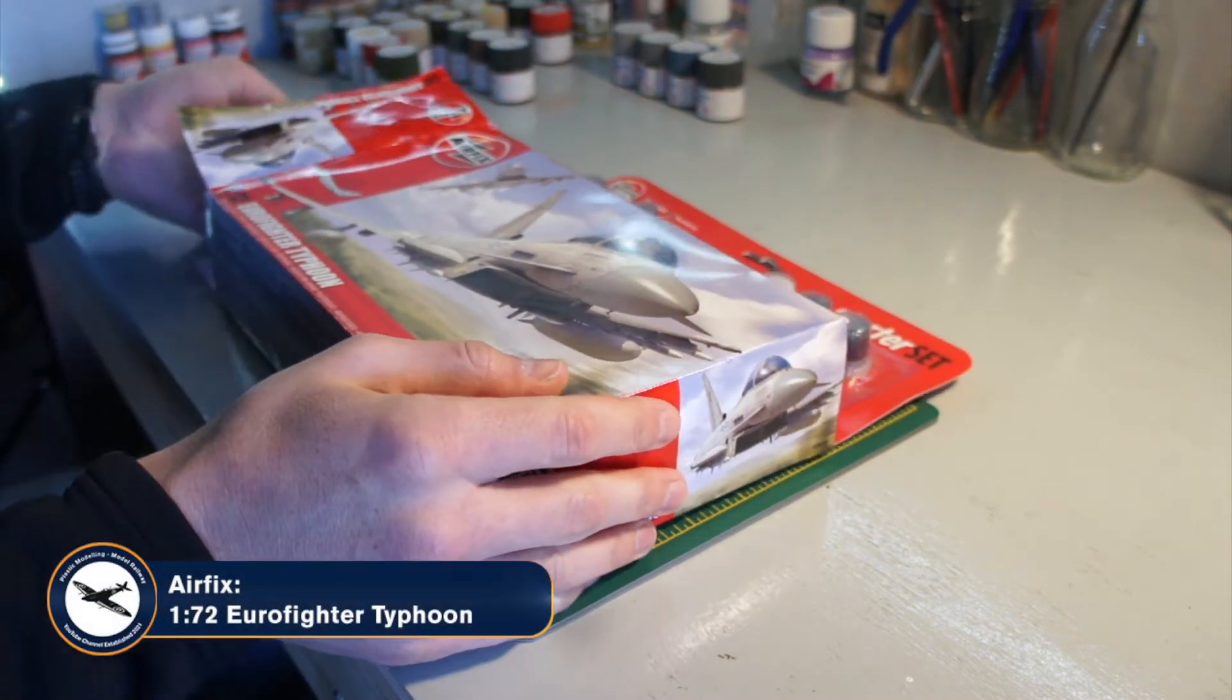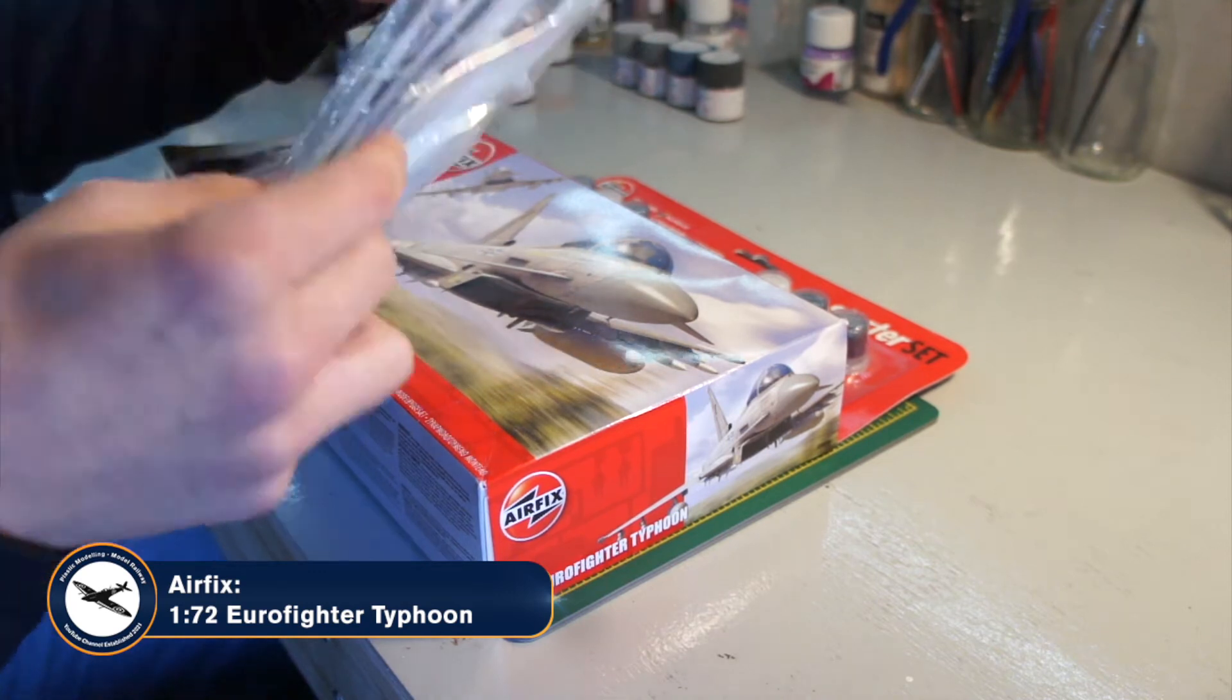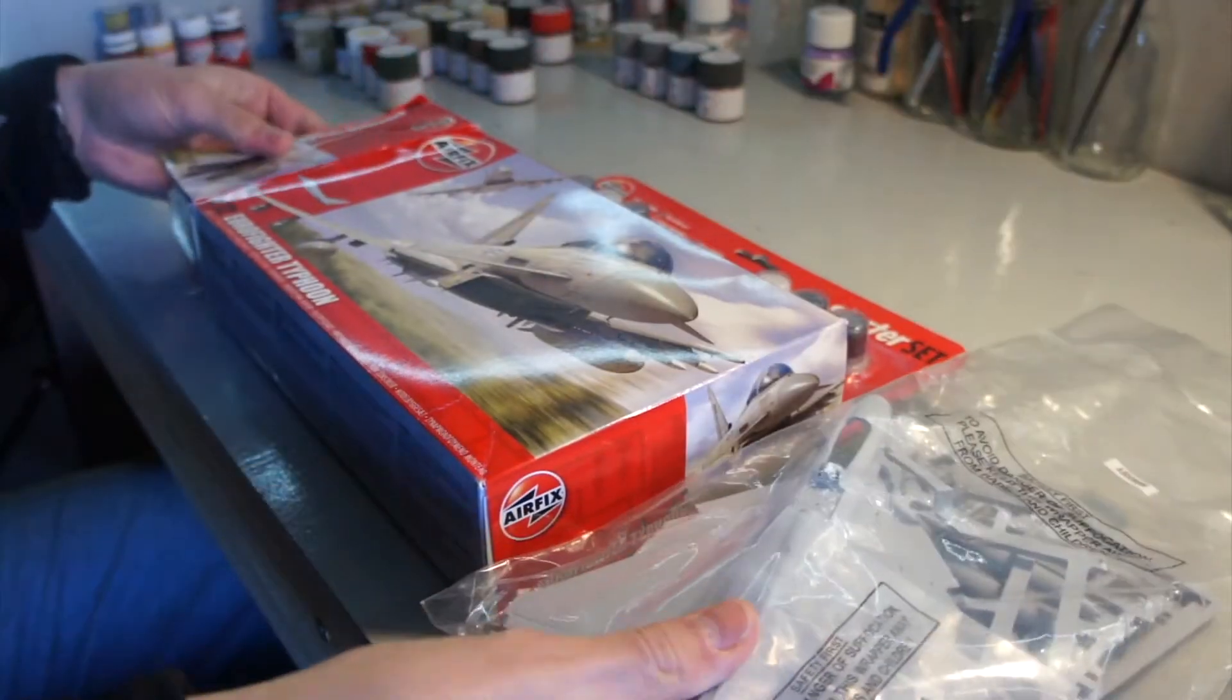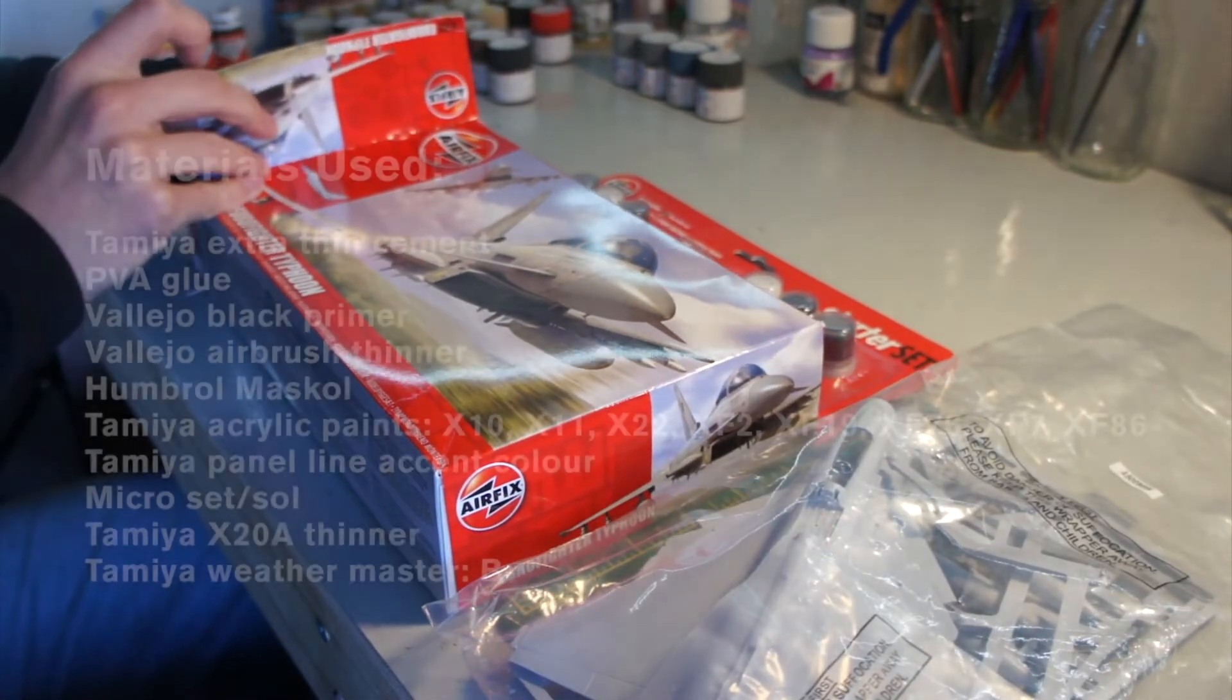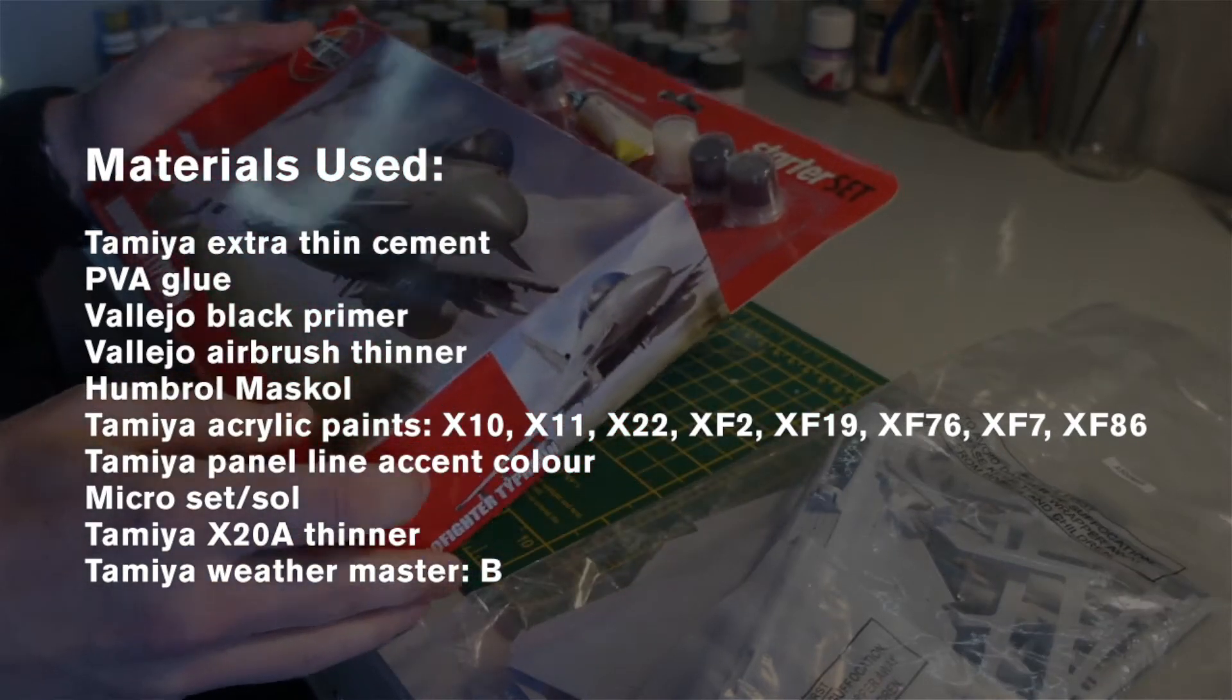Hello and welcome to today's build. Today's build is the Airfix 1:72 Eurofighter Typhoon. It is a starter set and comes with some paints and brushes, however I decided to use mainly Tamiya and Vallejo products.